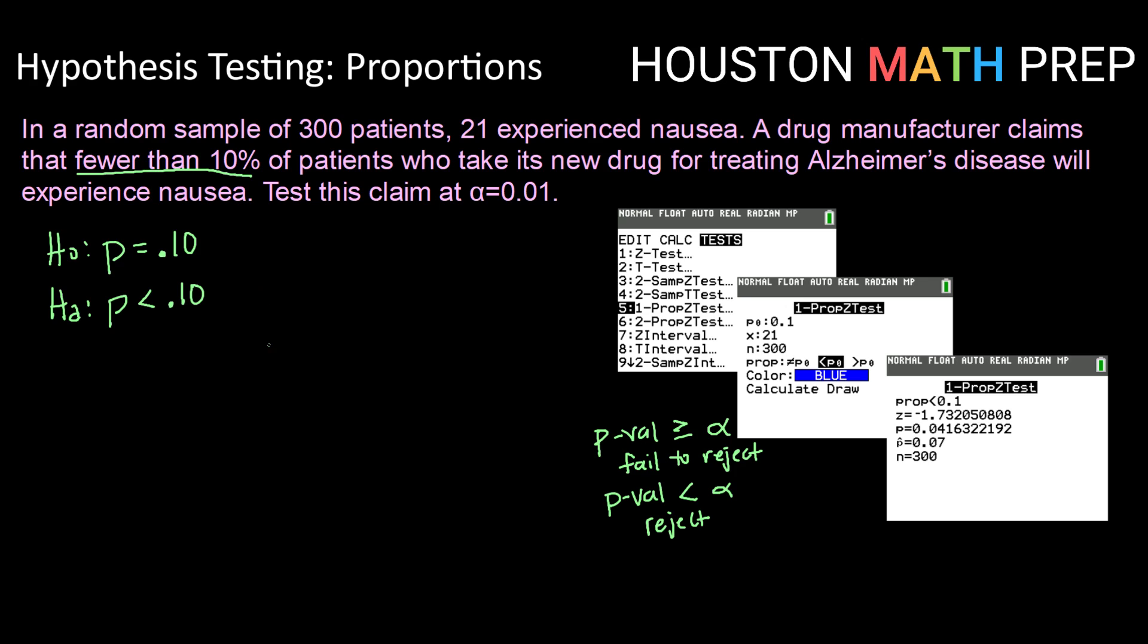So we are running what we call a one proportion z test. That can be found under the stat menu, toggled over to the test window. And then we'll find that one proportion z test. So this is a little bit different than a z test. A z test is for means. And this is a z test that is specifically geared for when we're working with a proportion.